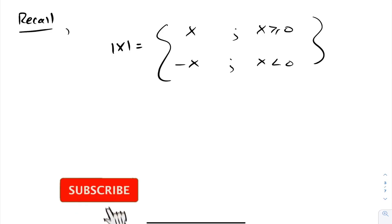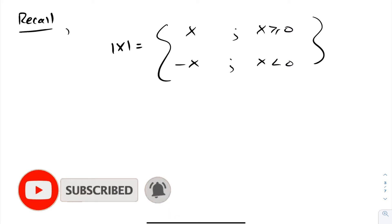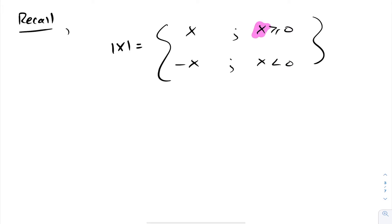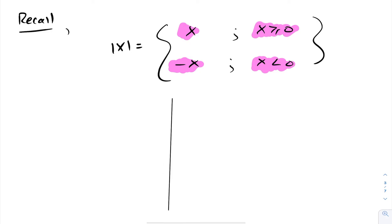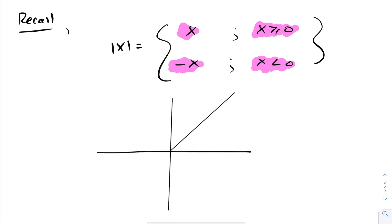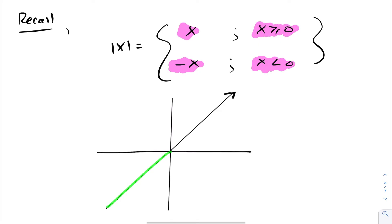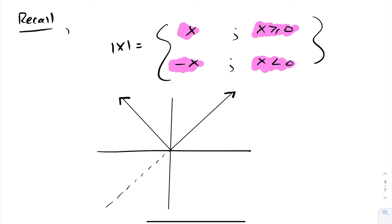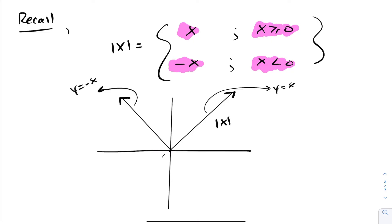Let's try some more. Recall that the absolute value function is defined as a piecewise function. When x is greater than or equal to 0, it just outputs itself. When x is negative, it multiplies by a minus sign to make it positive. When you graph the absolute value function, when x is positive it's essentially the line y = x, unchanged. When x is negative, we multiply by a minus sign, and you get the other branch of the V-shape. This is what the absolute value of x function looks like.